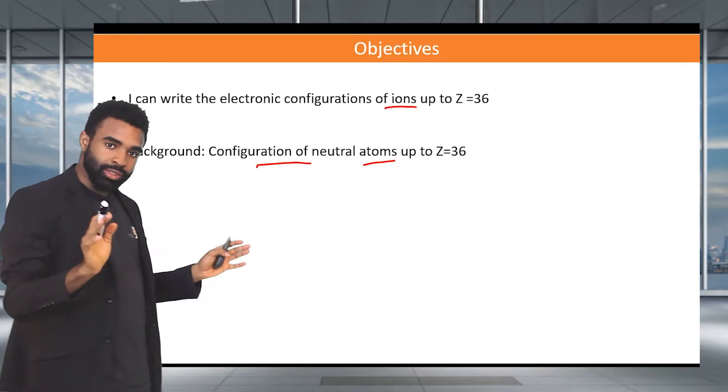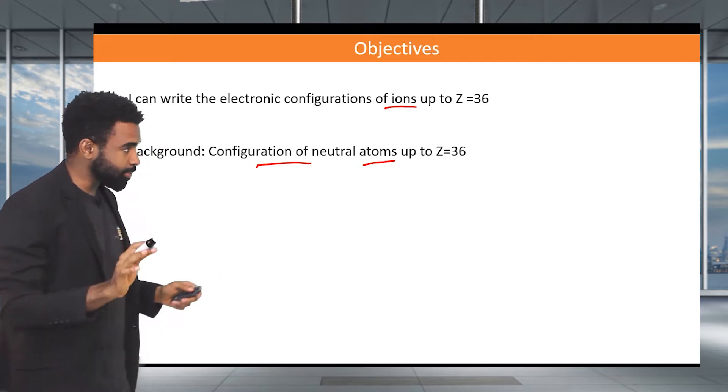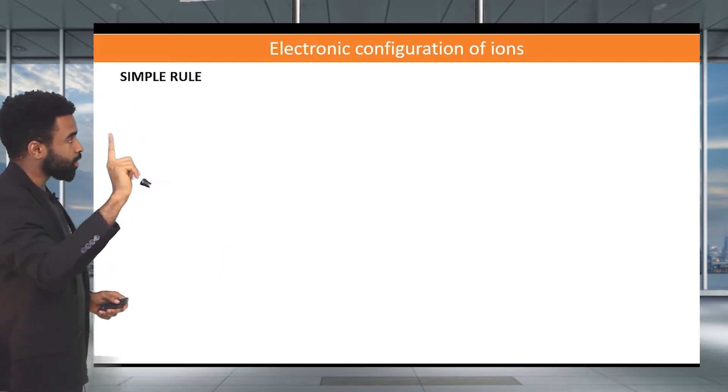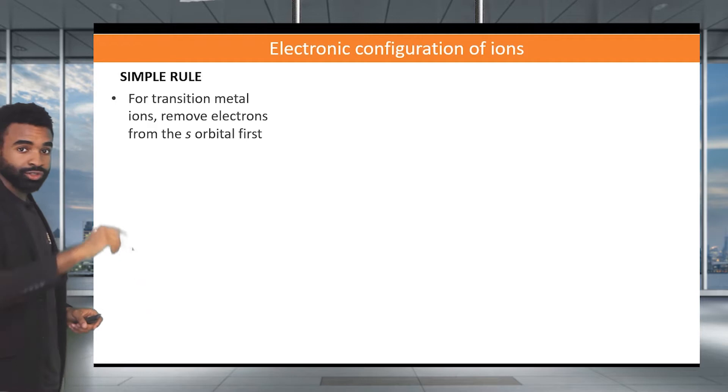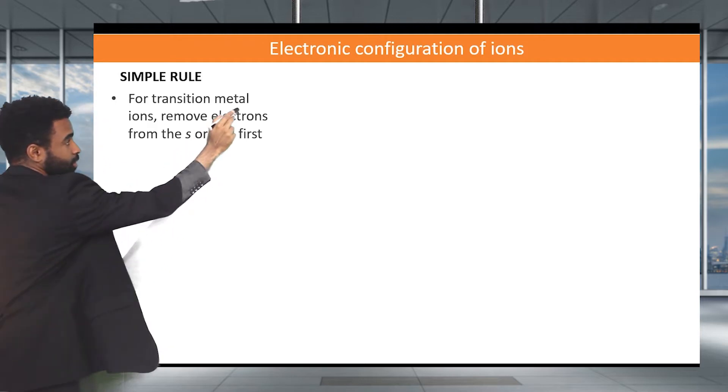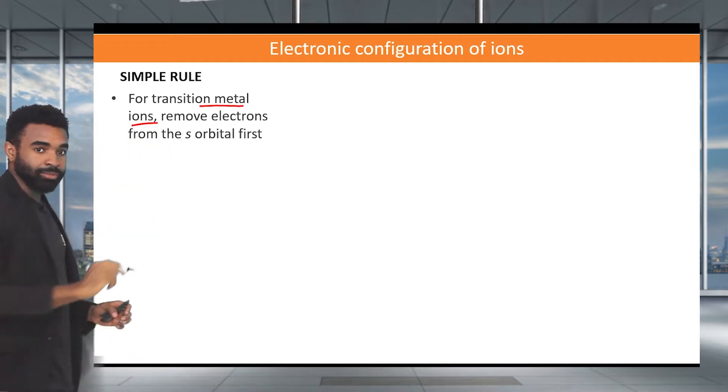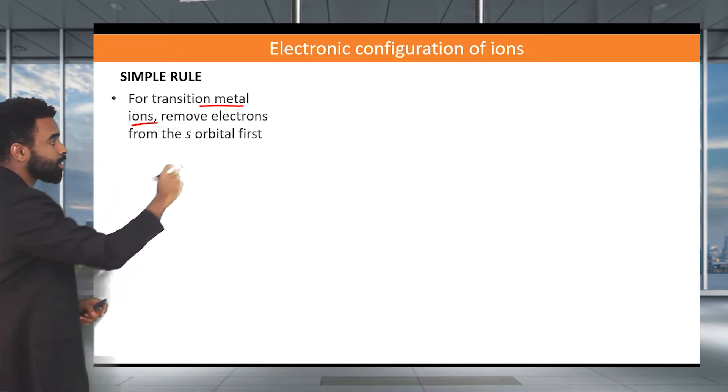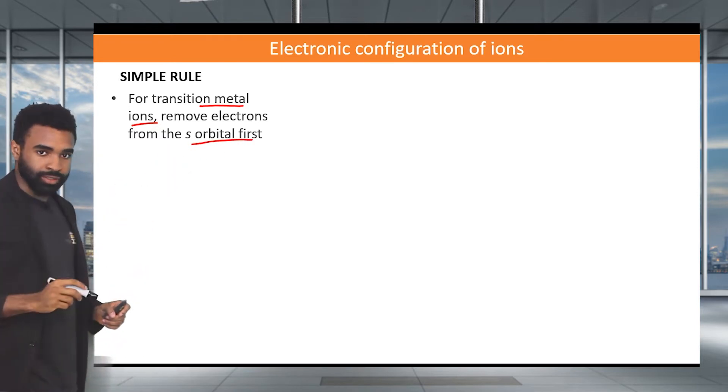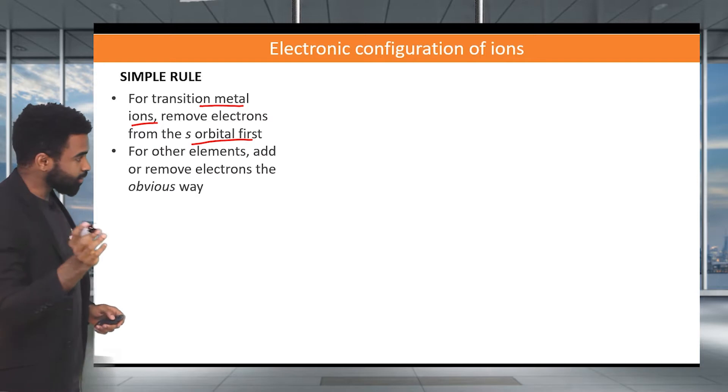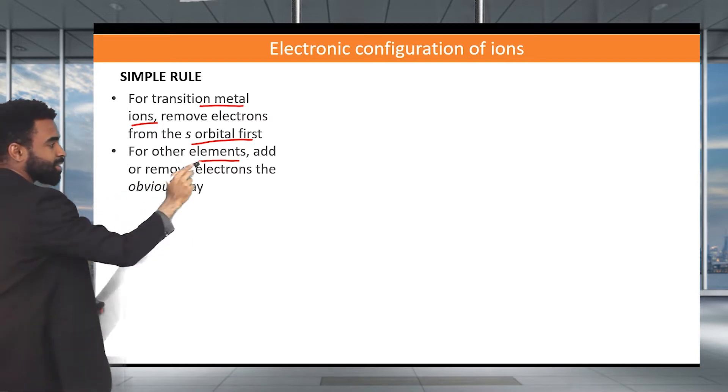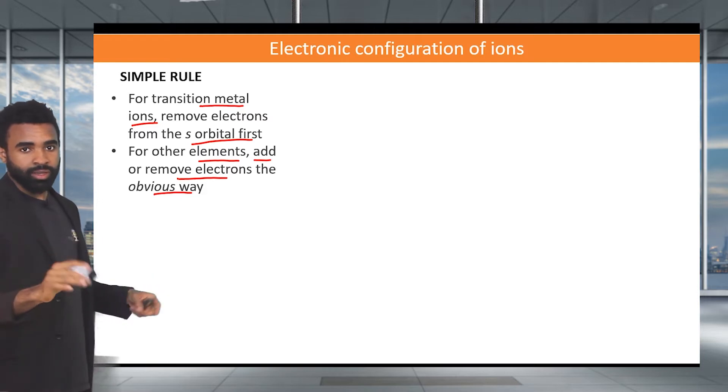So here's how we do it for ions. It's very simple. There are two rules. The first rule is the following: for transition metal ions, which are special ions, we're going to remove electrons from the s orbital first. And then for every other one, for other elements, we add or remove electrons in the obvious way. I'll show you what I mean by the obvious way in a second.